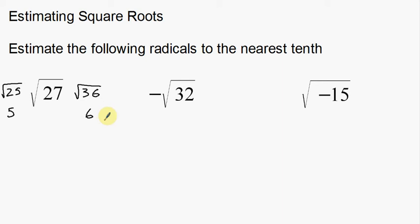So we know what those are. So that means 27 is going to be somewhere in between 5 and 6. Now, depending how close this number is to 25 or to 36, that's going to tell us kind of how close this number is to 5 or to 6.